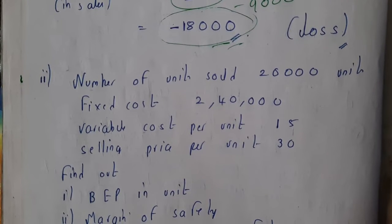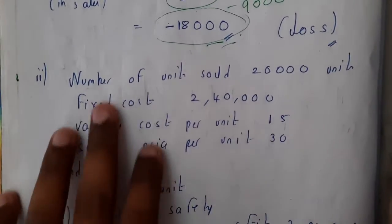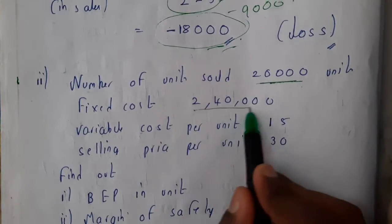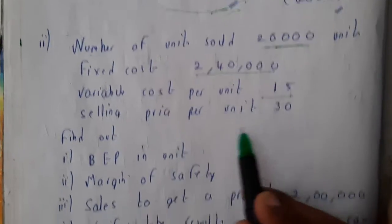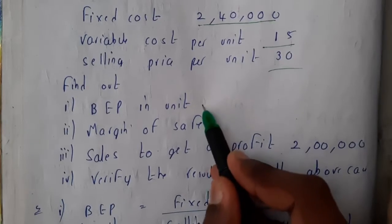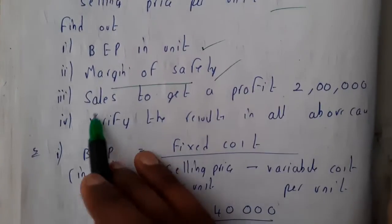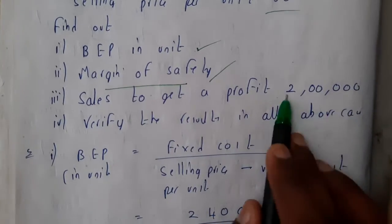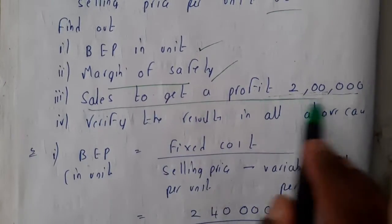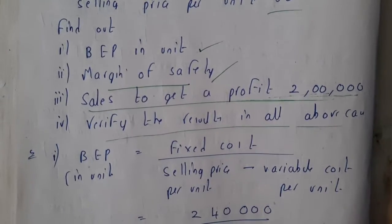Now let us go through the second problem. Number of units sold is 20,000, fixed cost is 2,40,000, variable cost is 15, and selling price is 30. We need to find BEP in units, margin of safety, and sales required to get a desired profit of 2 lakhs, and verify the result.